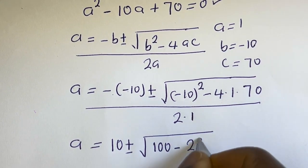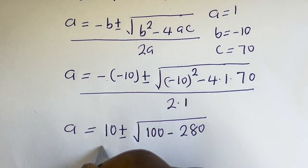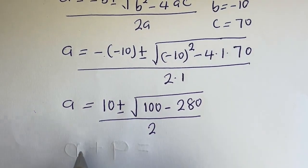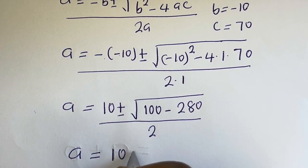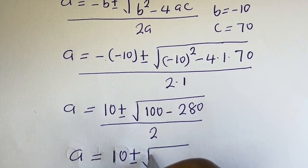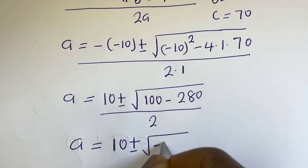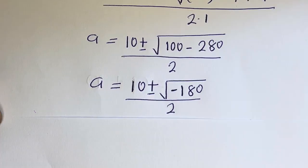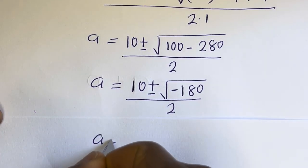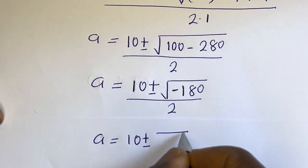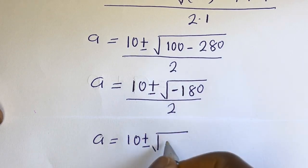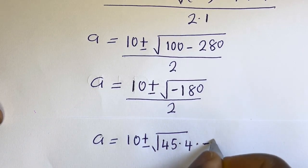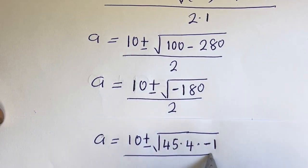Over 2 multiplied by 1, which is 2. So A is equal to 10 plus or minus square root of 100 minus 280, that is minus 180, everything over 2. Then A is equal to 10 plus or minus square root of minus 180, which can be written as square root of 45 multiplied by 4 multiplied by minus 1, over 2.